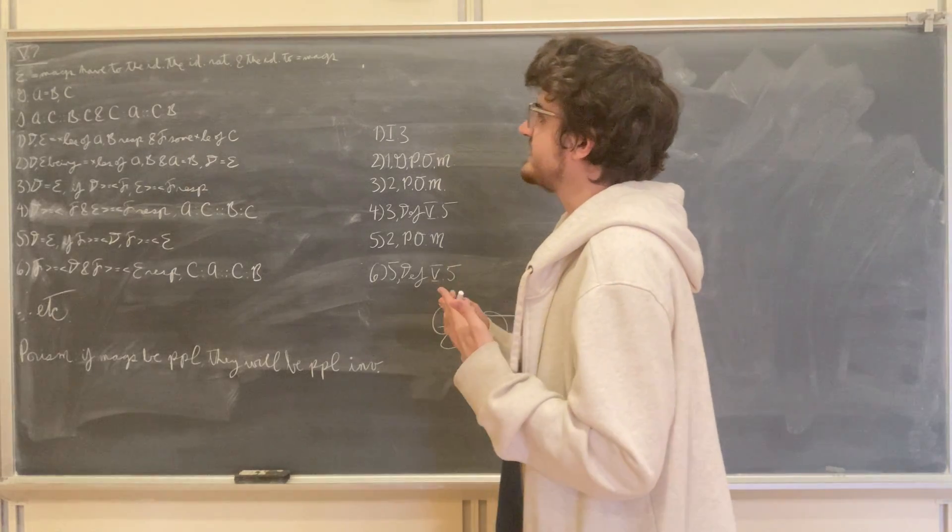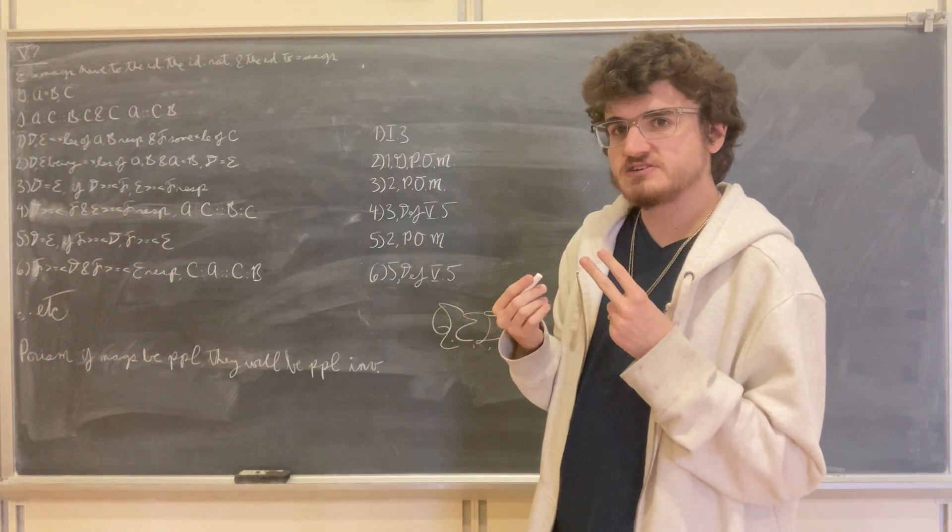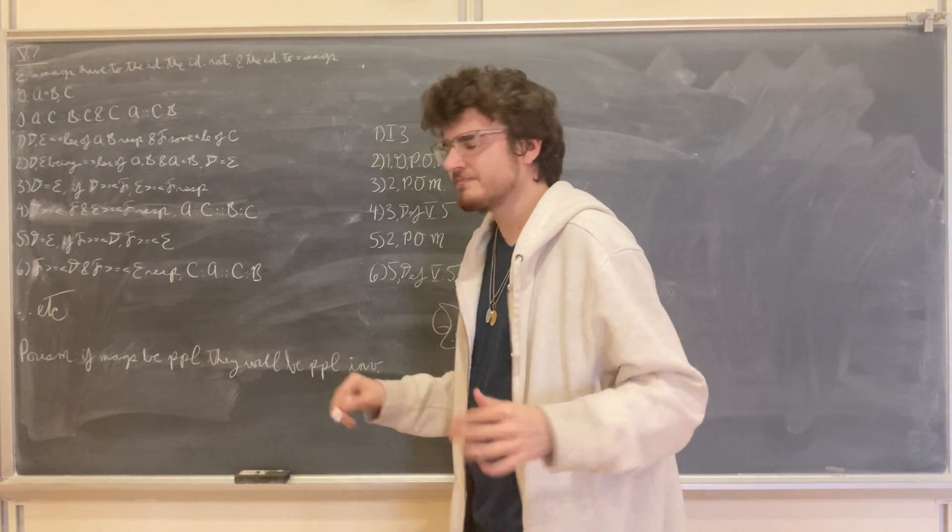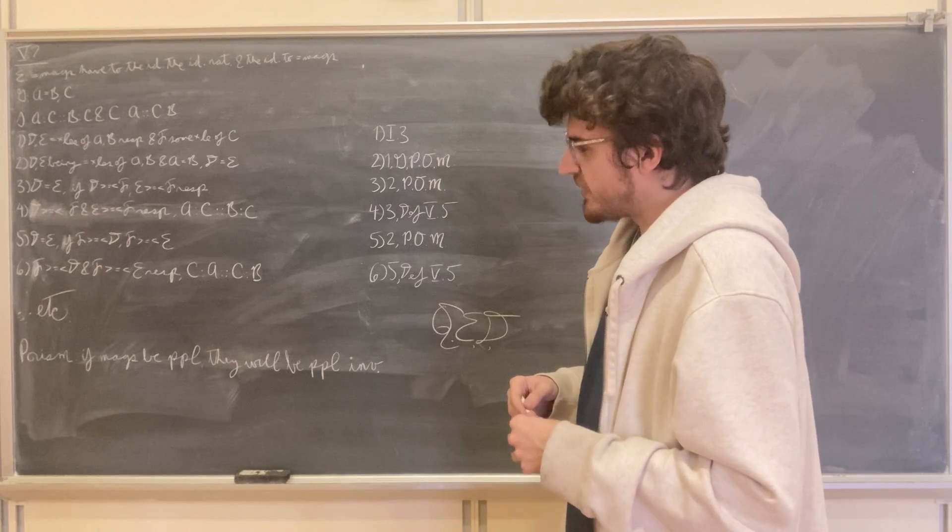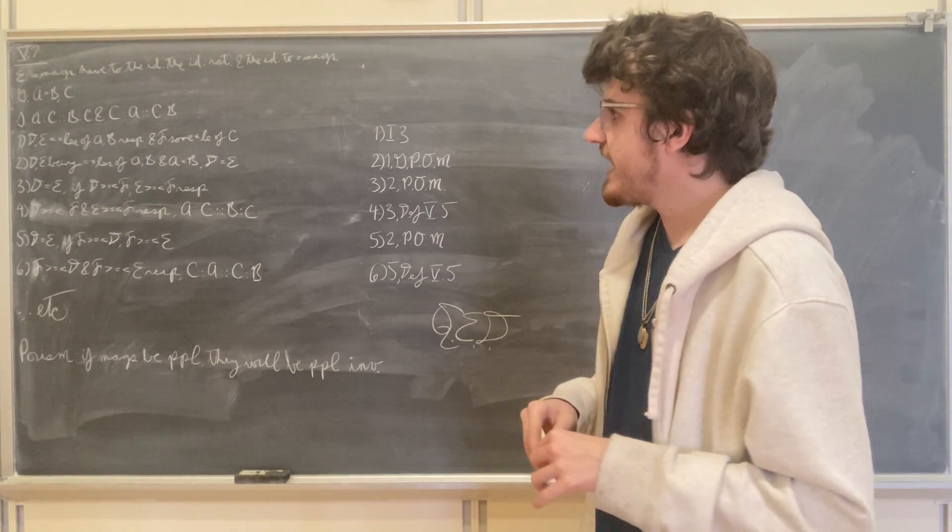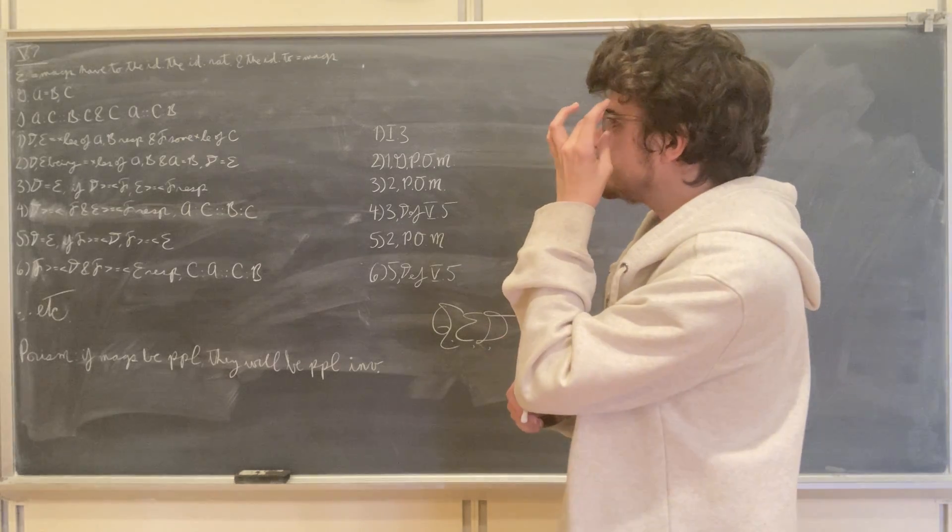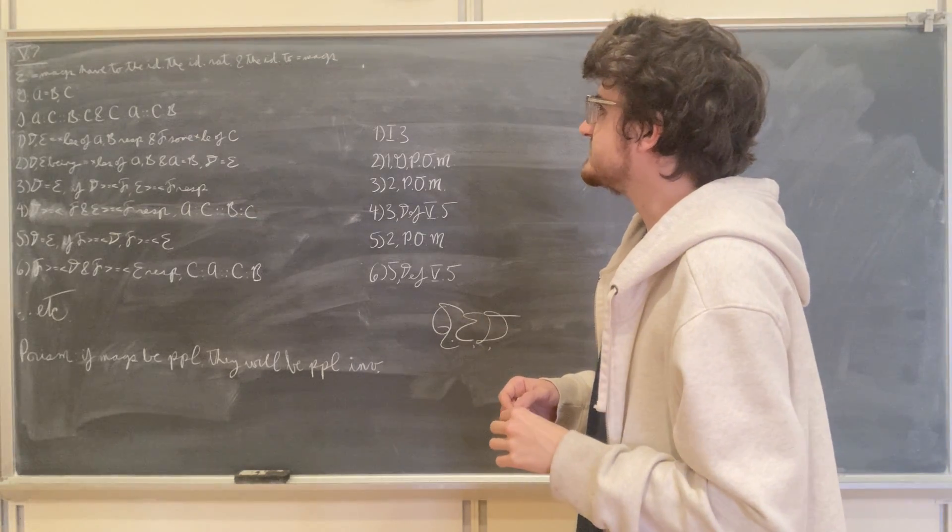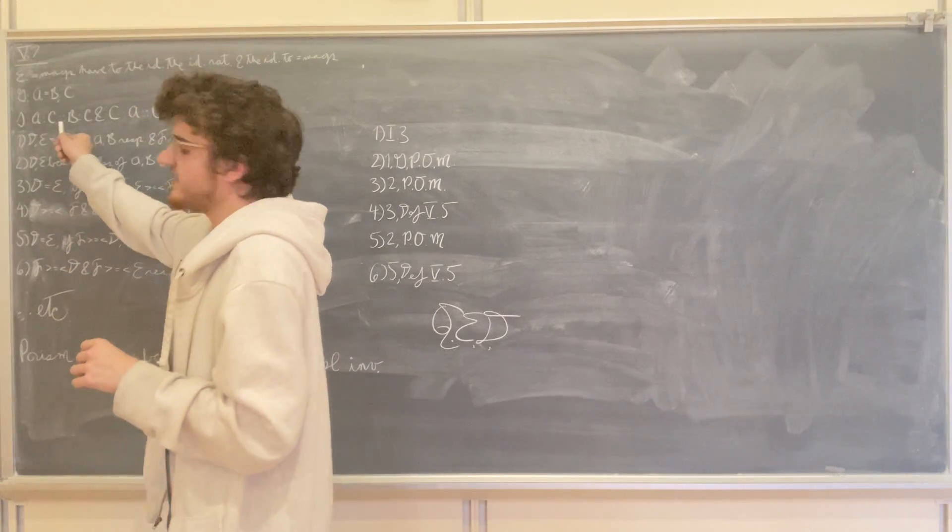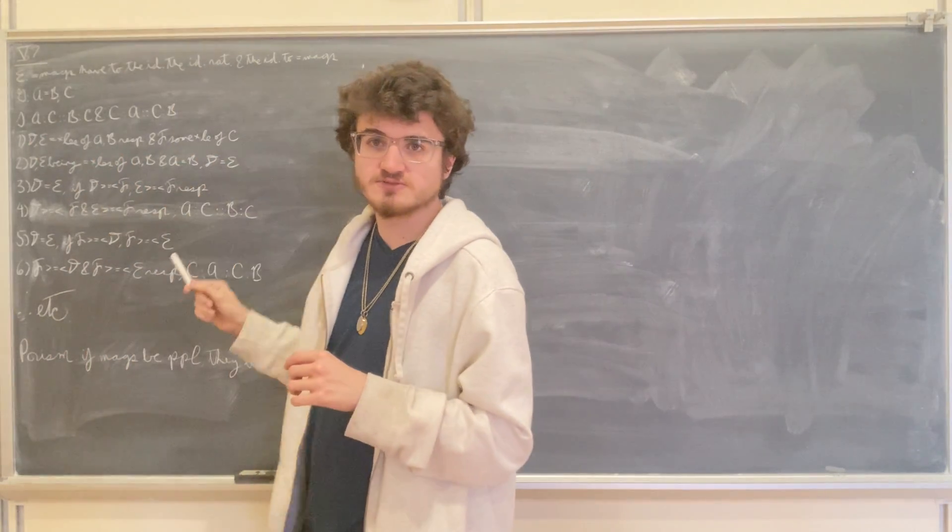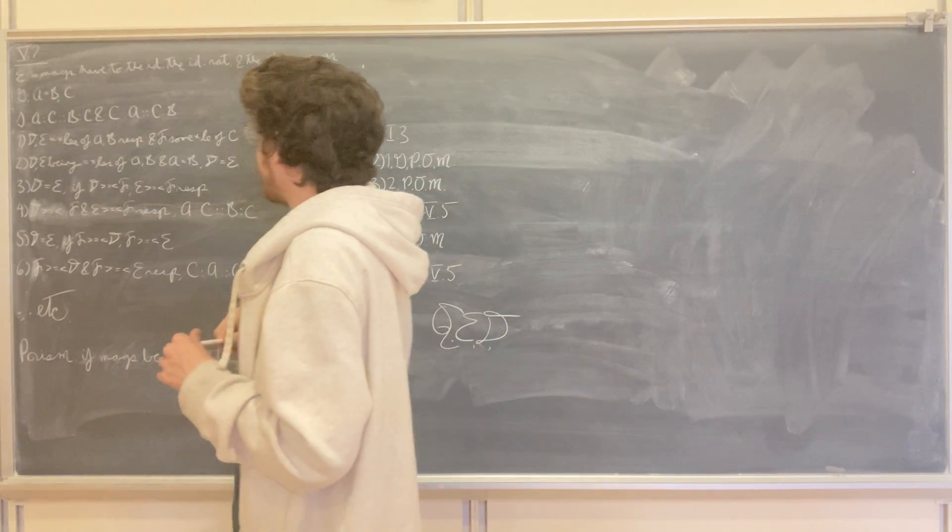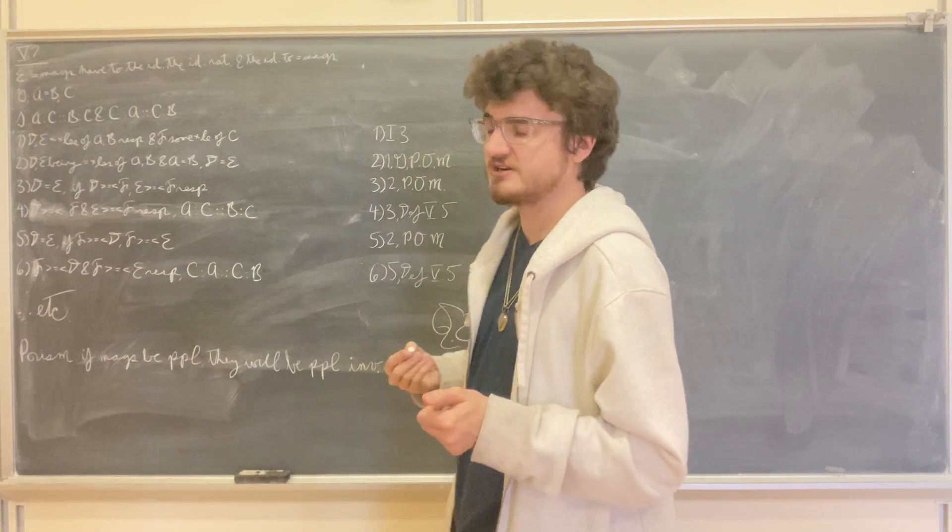What we're going to be given is two equal magnitudes A and B, so that A is equal to B, and some third magnitude C. And what we're going to prove is both that as A is to C, so B is to C, and also that as C is to A, so C is to B. So we have equal magnitudes A and B having the same ratio to the same magnitude C, and the same magnitude C has to the equal magnitudes A and B the same ratio.